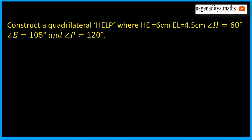Construct a quadrilateral HELP, where HE is equal to 6 cm, EL is equal to 4.5 cm, angle H is equal to 60 degrees, angle E is equal to 105 degrees, and angle P is equal to 120 degrees.